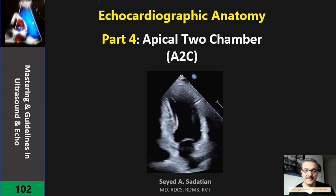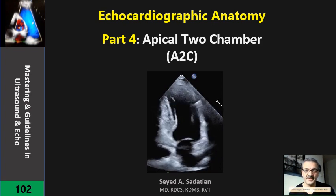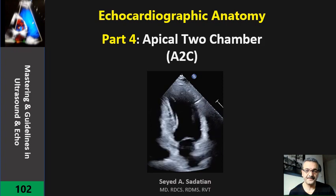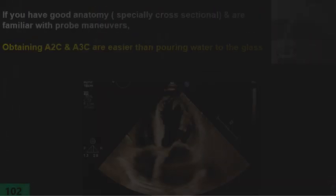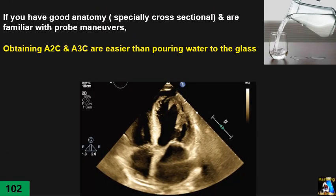Welcome to Mastering and Guideline in Ultrasound and ECHO. The most difficult view in ECHO for many techs, and even many experienced techs, are apical 2 and apical 3, but in reality they are the easiest views you can have in ECHO if you just know how to do it.